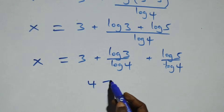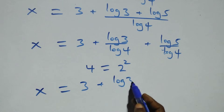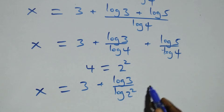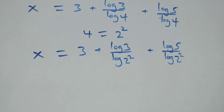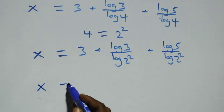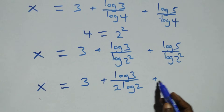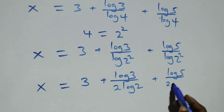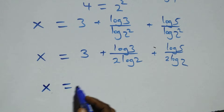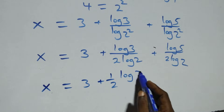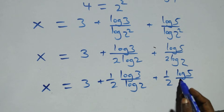Also, 4 can be expressed as 2 times 2, which is 2 squared. So we have x equals 3 plus log 3 over log 2 squared plus log 5 over log 2 squared. Applying the power rule, 2 comes down in the denominator, giving x equals 3 plus log 3 over 2 log 2 plus log 5 over 2 log 2. We can write this as x equals 3 plus one half times log 3 over log 2 plus one half times log 5 over log 2.